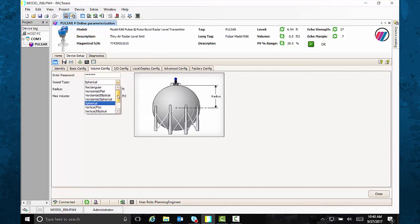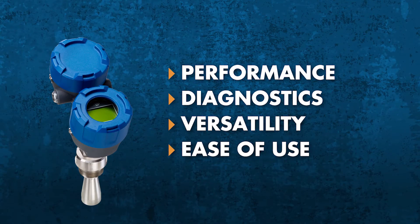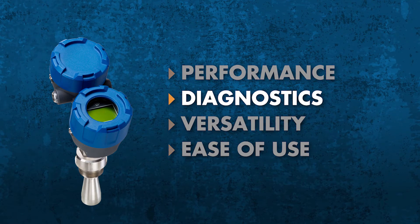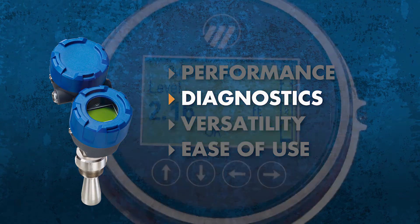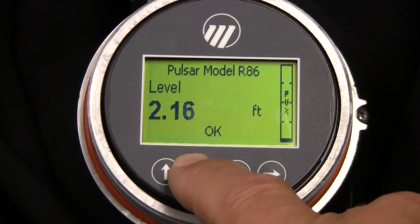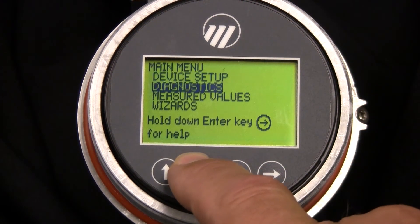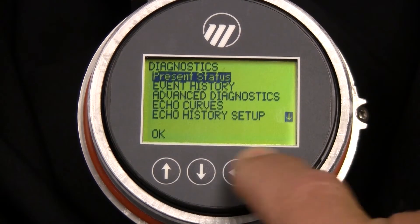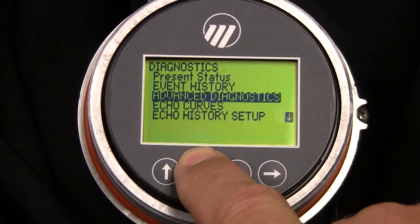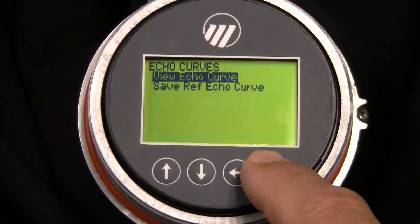The Pulsar Model R86 also has Magnetrol's industry-leading diagnostics to help minimize downtime. Like automated echo capture that grabs an echo curve based on key diagnostics such as the loss of echo. That means no more wondering what happened in the middle of the night—the information is right there in the transmitter in the morning.